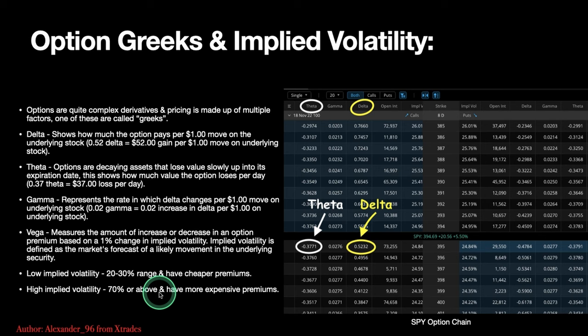Low implied volatility means cheaper premiums; high implied volatility means more expensive premiums. Pay attention to deltas — the higher the delta, the more in the money you are; the lower the delta, the more out of the money. Above 0.5 delta is generally at the money, and anything higher is in the money. You can use delta as another way to figure out how deep in or out of the money a contract is.